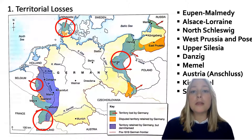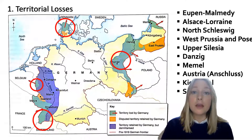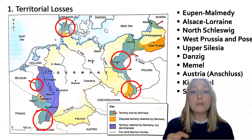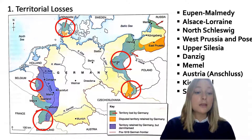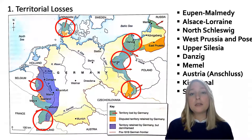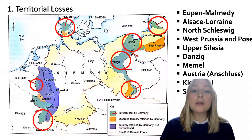Over one million Germans now came under Polish control without being consulted, and many Germans considered Poles as inferior. Upper Silesia was voted to be divided between Poland and Germany. Danzig, the German city and port, was made an international free city under the control of the League of Nations. Memel was seized by Lithuania in 1920.